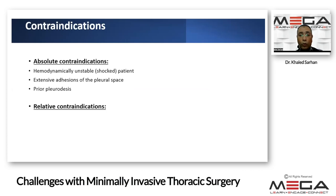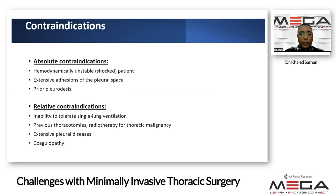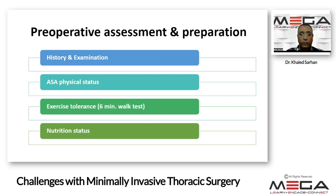We have absolute contraindications like patients who are hemodynamically unstable, or when access to video-assisted thoracoscopy is difficult due to extensive adhesions of the pleural space or prior pleurodesis. We have also relative contraindications like inability to tolerate single lung ventilation, previous thoracotomy, radiotherapy for malignancies, extensive pleural disease, and coagulopathy.